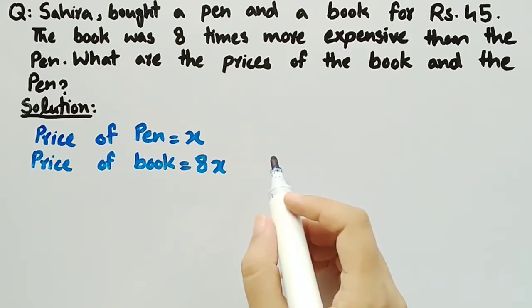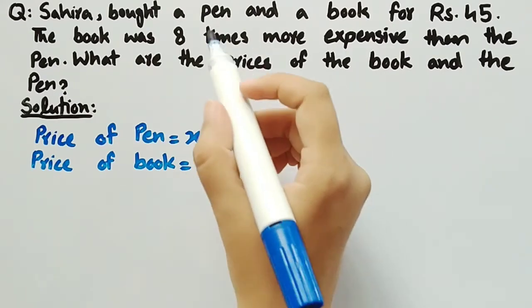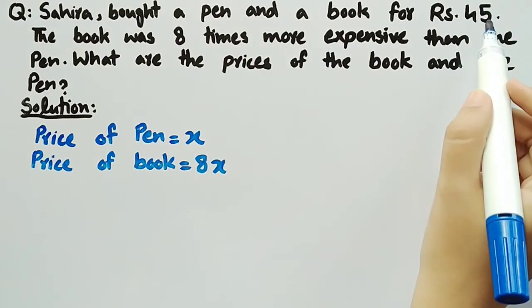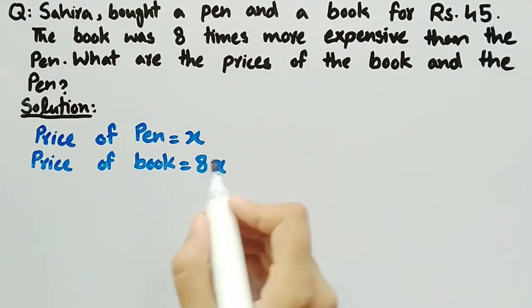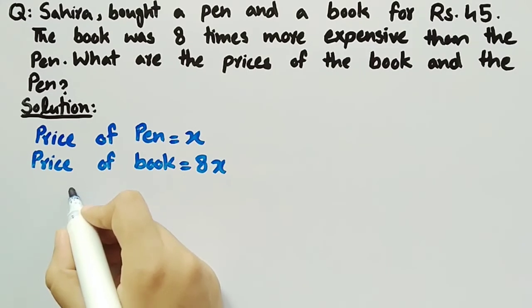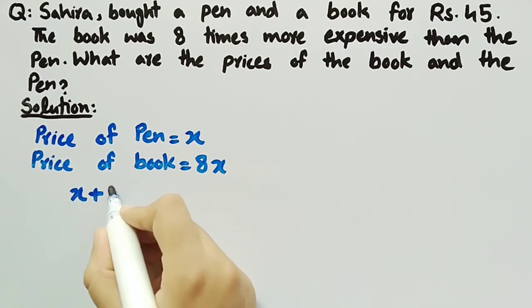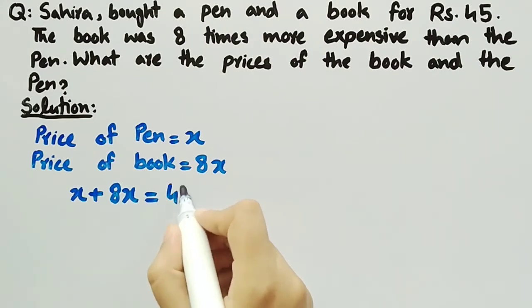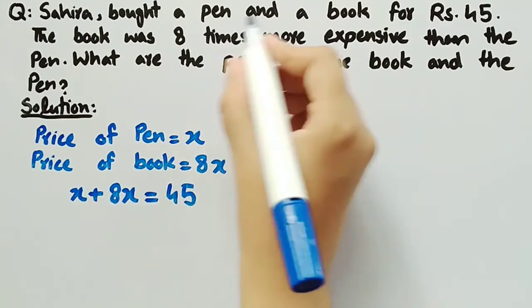And it is also given that if we combine the price of book and the pen, it is equal to 45. So now adding x plus 8x, it will be equal to 45 since it is given in the question.